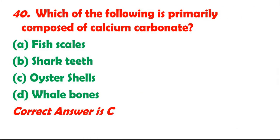Question 40: Which of the following is primarily composed of calcium carbonate? A. Fish scales. B. Shark teeth. C. Oyster shells. D. Whale bones. Correct answer is C.